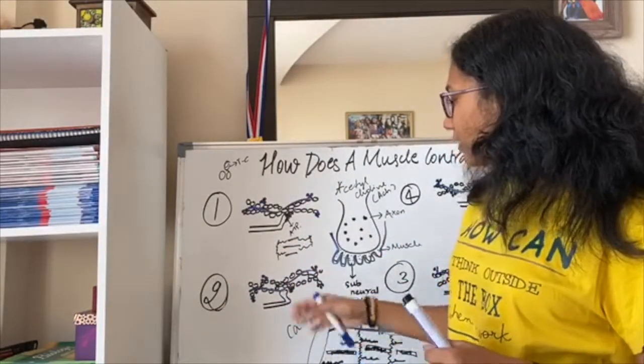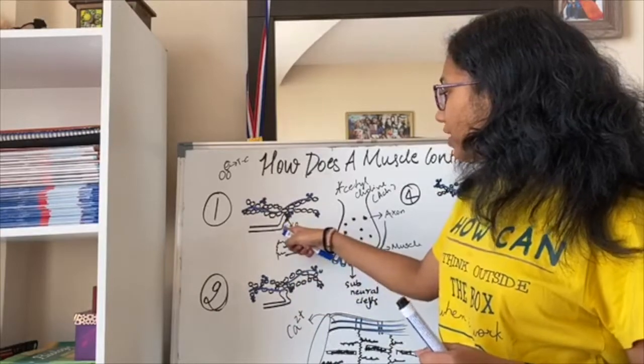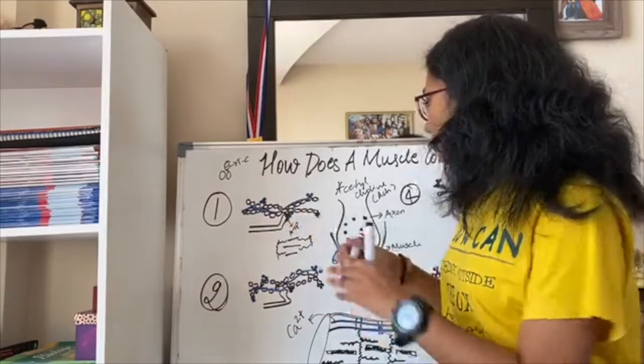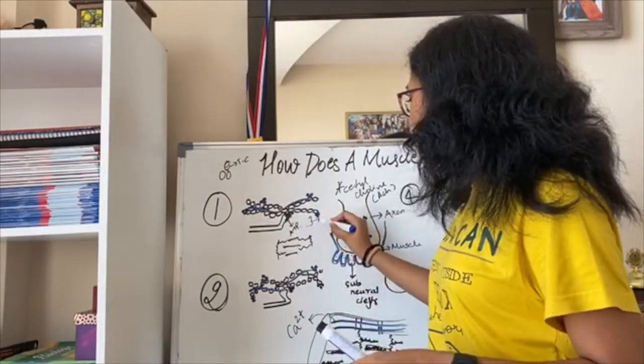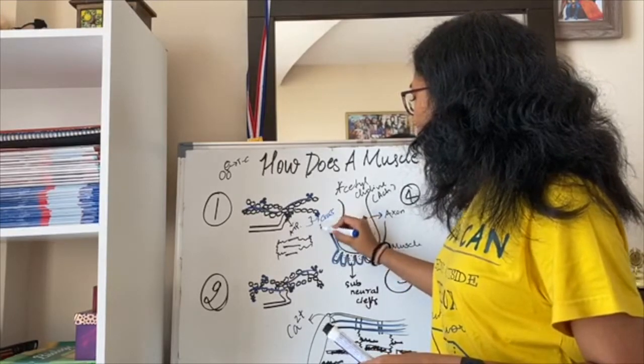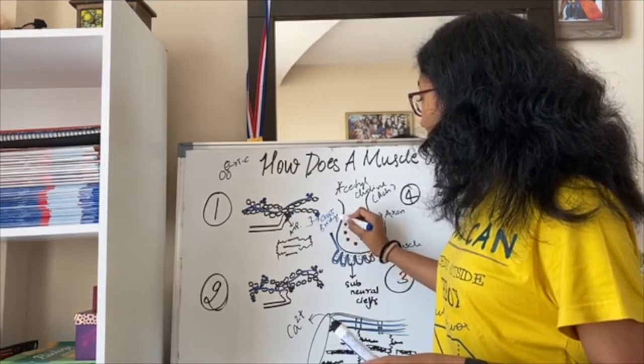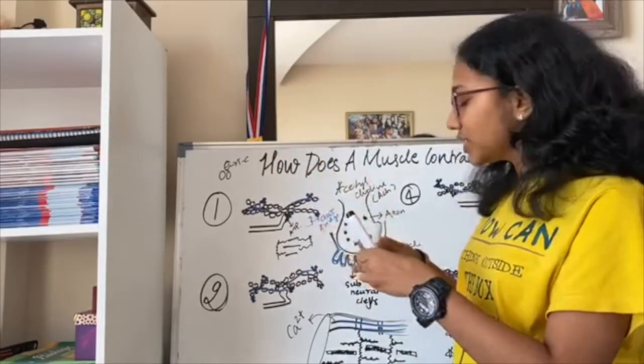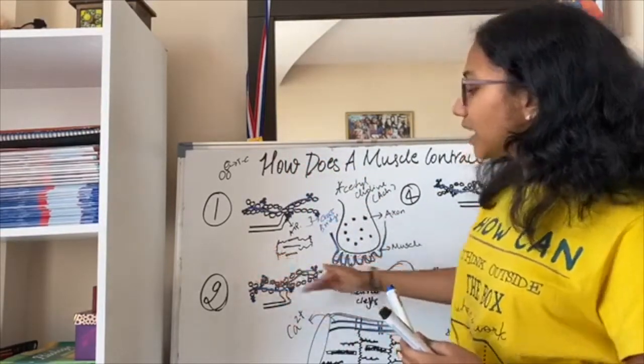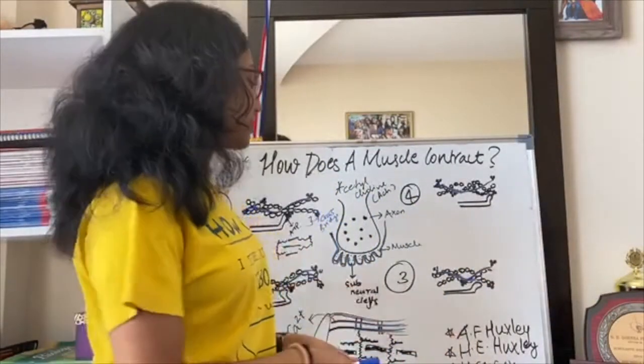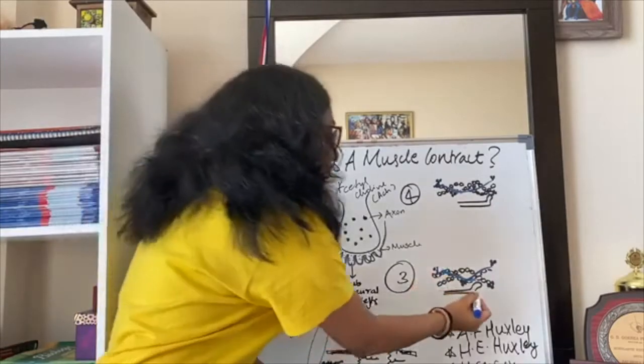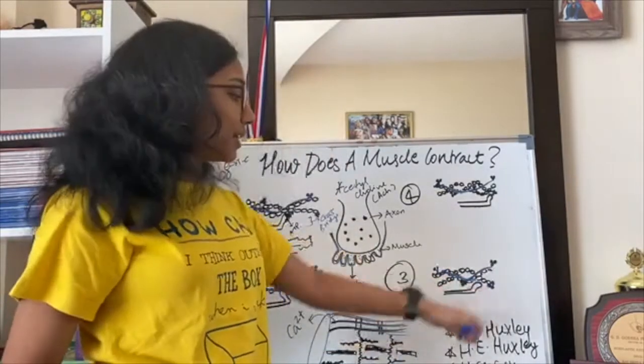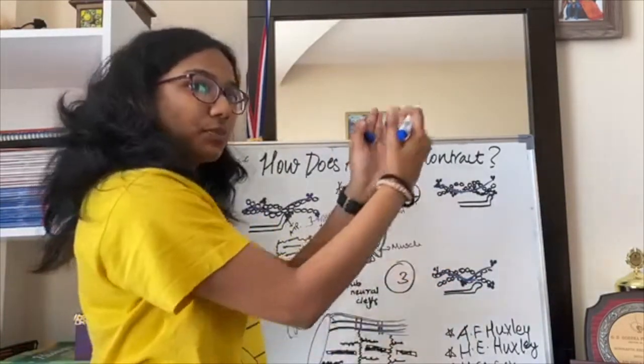So this is the sliding part. This is the formation of crossbridge, this structure is known as crossbridge. Next, this crossbridge will start shifting sidewards, so that this myosin filament can move forward. Coming to the third step, that is here.